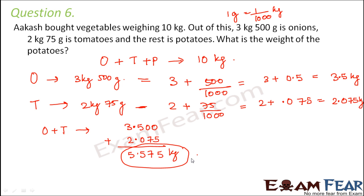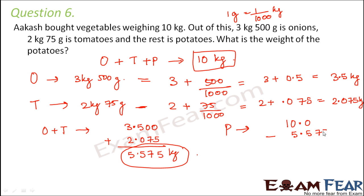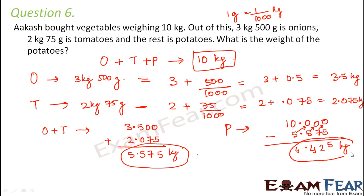The weight of potatoes is the total weight minus the weight of onions and tomatoes: 10 minus 5.575. Writing 10 as 10.000, we subtract. Borrowing as needed through each column: 10 minus 5 is 5, give back 1; continuing the borrowing steps gives us 4.425 kg. So 4.425 kg is the weight of the potatoes.